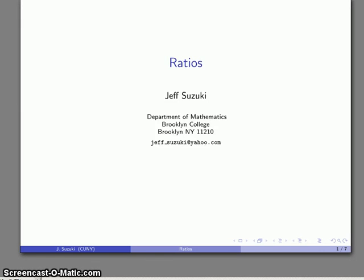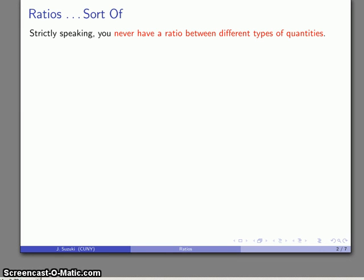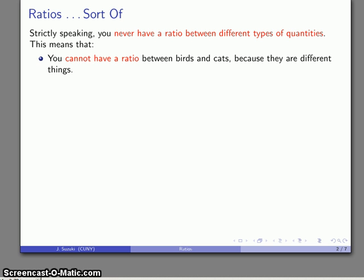We've looked at ratios, and there's an important qualification we have to make here. Strictly speaking, when you find a ratio, you can never have a ratio between different types of quantities. For example, you cannot have a ratio between birds and cats because a bird is not a cat.